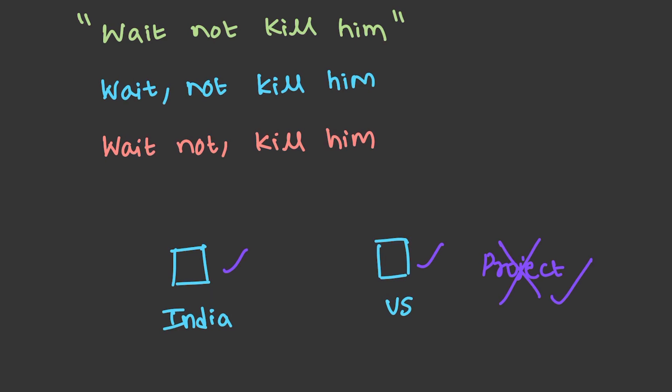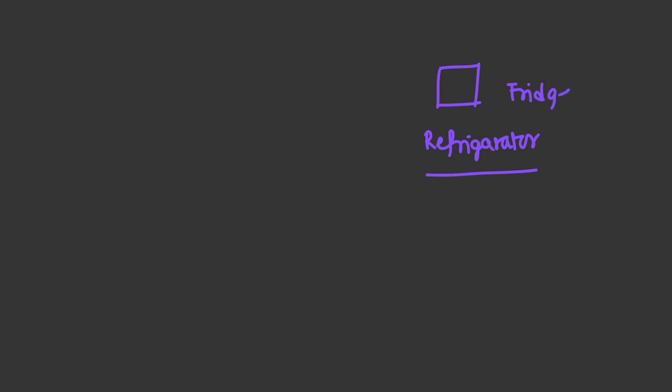So our language which has to be defined should be non-ambiguous. To understand versatility, consider this example: if it is a refrigerator, it can even be called a fridge. So a single entity is associated with two different names. But if we tend to define an integer in a programming language, it has to be the same throughout the world. That is why our language should not be versatile either. After understanding ambiguity and versatility, I think you got an idea why we have to design new languages like C, C++, C Sharp, or Python to be used over natural languages. Programming languages have an edge over natural languages by not being ambiguous and not being versatile.